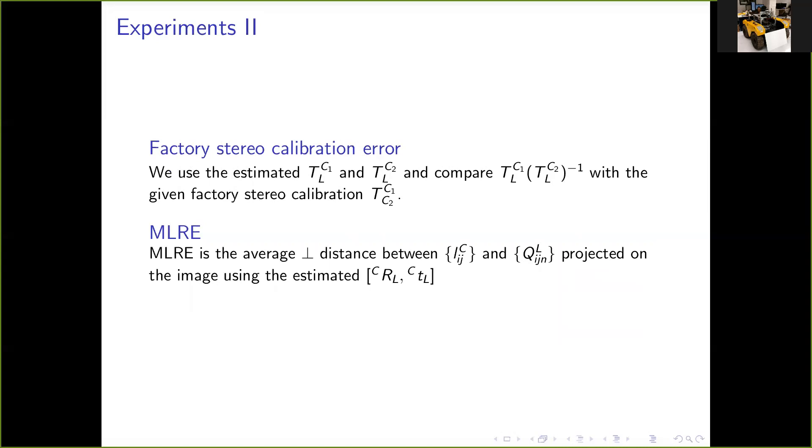The factory stereo calibration error is the error between the known stereo calibration C1-TC2 and the composition of the estimated transforms C1-TL and C2-TL. Mean line reprojection error, MLRE, is the average perpendicular distance between the planar target's edge detected in camera and the projections of the corresponding edge points detected in LIDAR. These projections are calculated using the estimated extrinsic calibration parameters and hence the MLRE tells us how good or bad the estimation is.